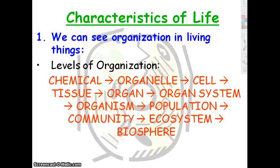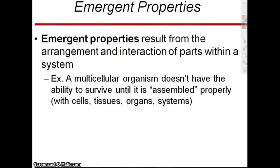An organelle is a cell part that carries on a particular function. If we assemble several organelles in a particular way, we get a cell, and it goes on from there — tissue, organ. We call these properties of living things emergent properties — a property that results from a particular arrangement.